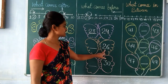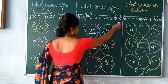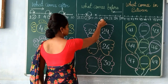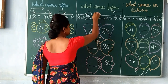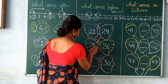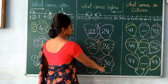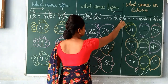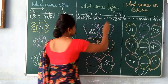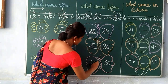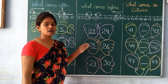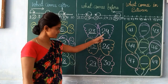What comes before 26? Yes, it comes 25. We will count the number: 30, 29, 28, 27, 26. What comes before 26? Yes, it comes 25. Next number is 30. What comes before 30? It comes 29. My dear students, numbers that come before are always smaller than the given number.